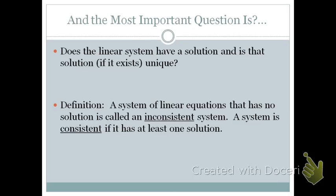And so we have a definition. A system of linear equations that has no solution is called an inconsistent system. And a system that has at least one solution is called a consistent system.